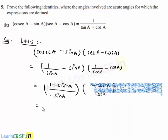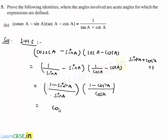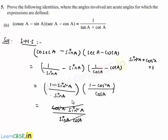So, using the identity that sin squared a plus cos squared a equals 1, we know that 1 minus sin squared a is cos squared a, and 1 minus cos squared a is sin squared a. So the expression becomes cos squared a into sin squared a, divided by sin a into cos a. Here sin a and cos a cancel, and finally we get the simplified form of LHS as cos a into sin a.